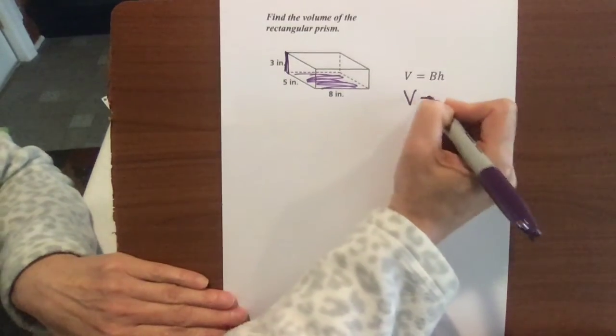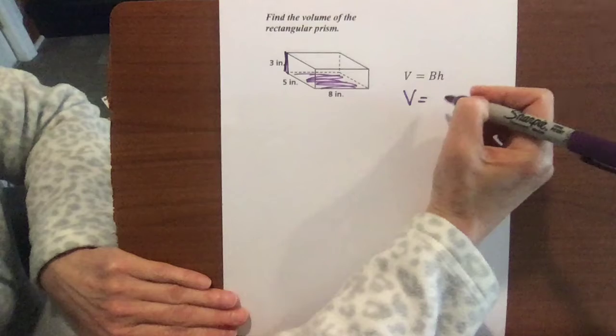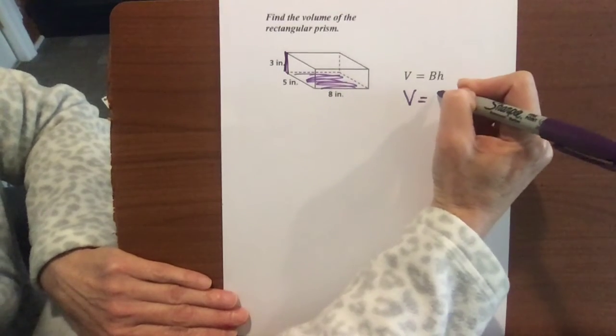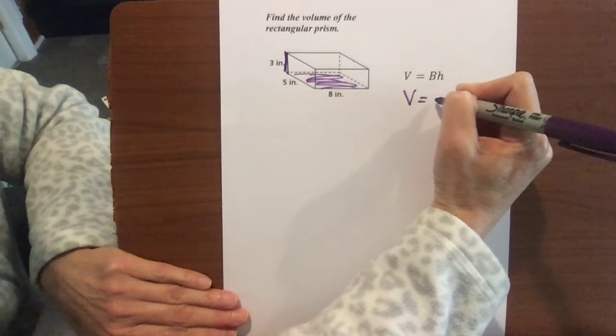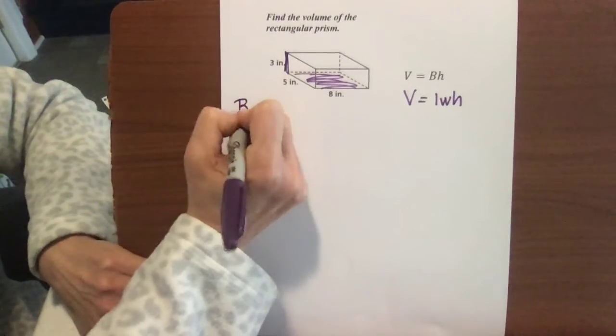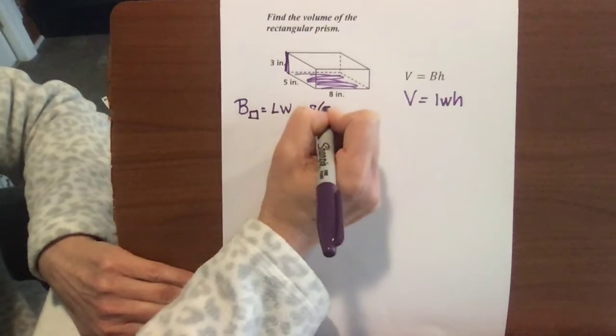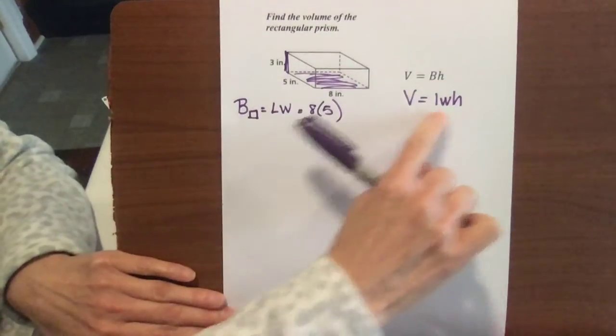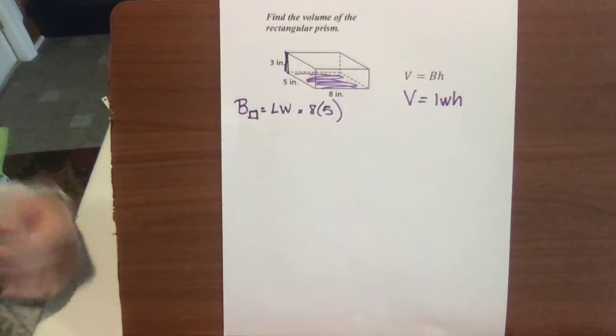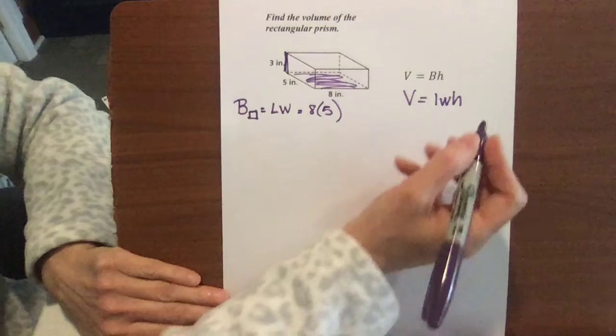Now you guys have worked with boxes and cubes for a long time. This is probably fifth, sixth, seventh grade, you've seen this. So base area is just length times width because that's a rectangle. So we know volume of a rectangular prism or a cube to be length times width times height, and you can use that. Just want to point out that your base area is going to be length times width, which is 8 times 5. General rule versus all these little rules depending on the type of base that you have.